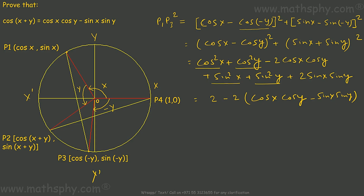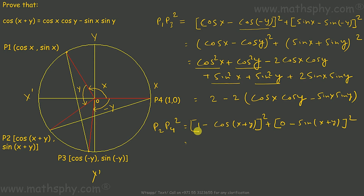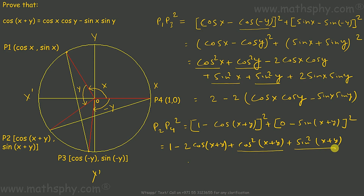Now let's find the distance between P4 and P2. I write P2P4². Using the coordinates of P2 = (cos(x+y), sin(x+y)) and P4 = (1, 0), this gives 1 + 1 = 2, minus 2 cos(x + y). So P2P4² = 2 − 2 cos(x + y).